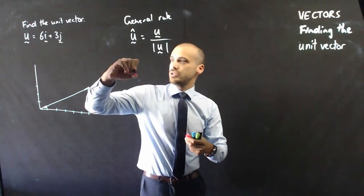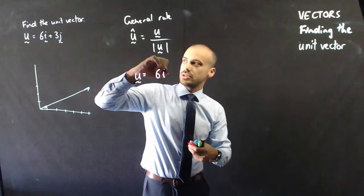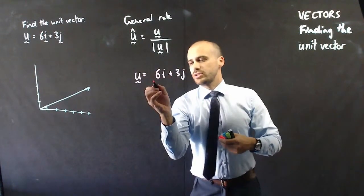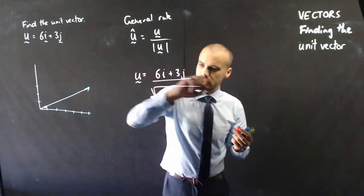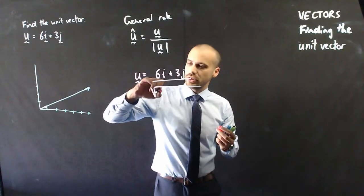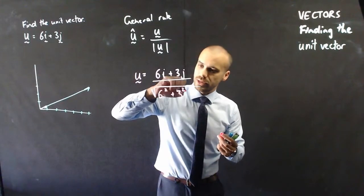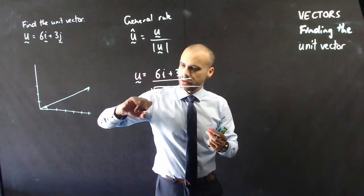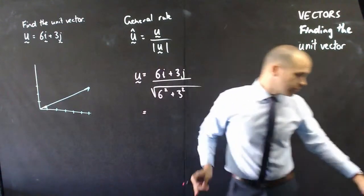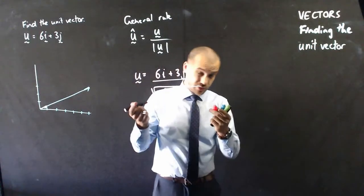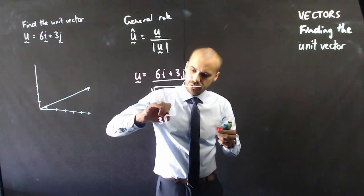So, vector u is equal to 6i plus 3j, and we're going to divide it by the magnitude of vector u. And the magnitude of vector u is the square root of 6 squared plus 3 squared. So, that's going to be a number, 36 plus 9, square root of 45. And all of that work that you did on surds will tell you that square root of 45 is the same as 3 root 5.